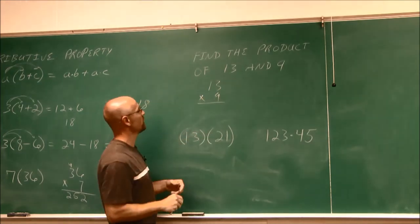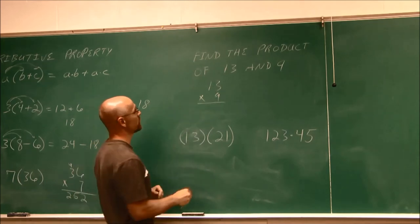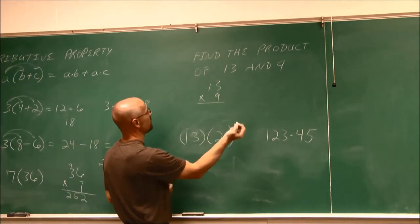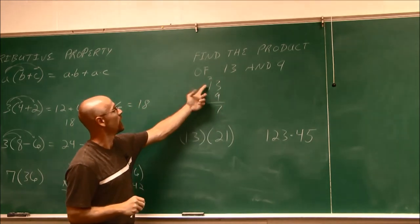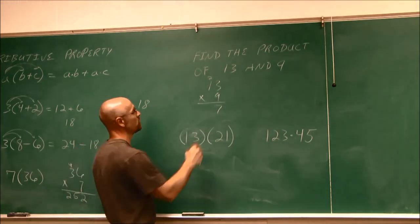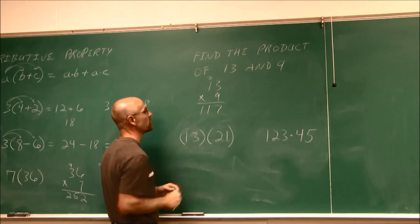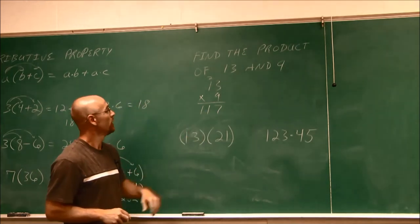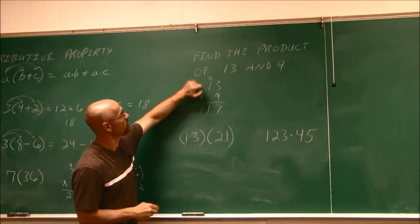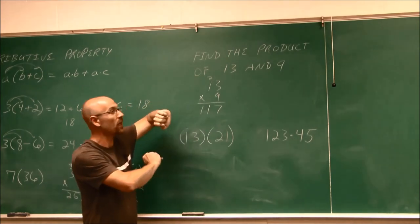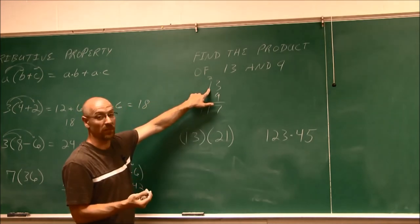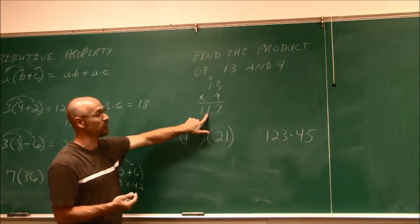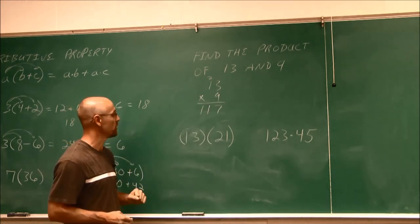So maybe I do it horizontally here. 9 times 3 is going to give me 27. I carry the 2. 9 times 1 is 9, plus the 2 is going to give me 11. So I get 117. Now if we think about this, that 9 times 3, that 27 was a partial product. 9 times 1 in the tens place, which would be 90. 90 and 27 is 117, those partial products.